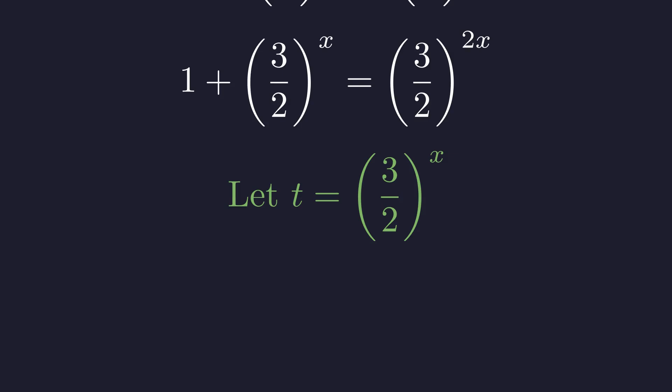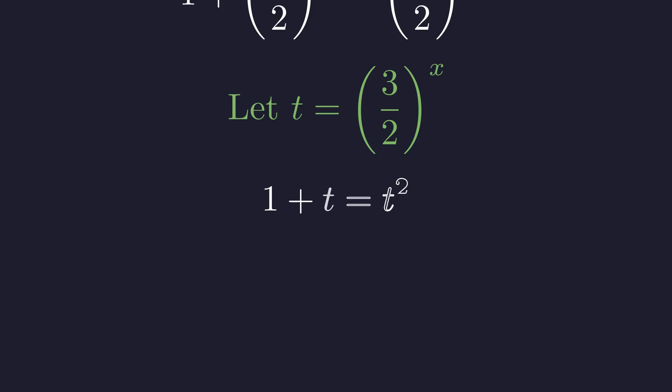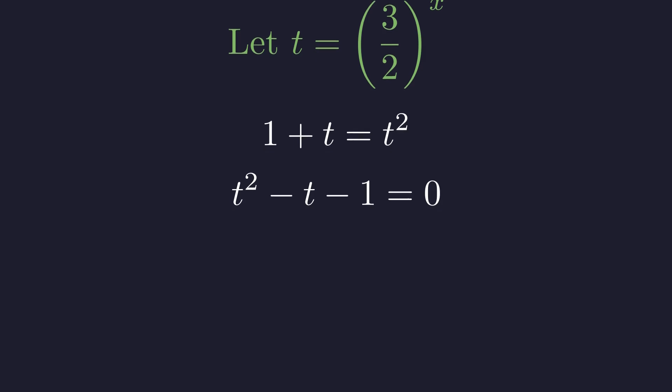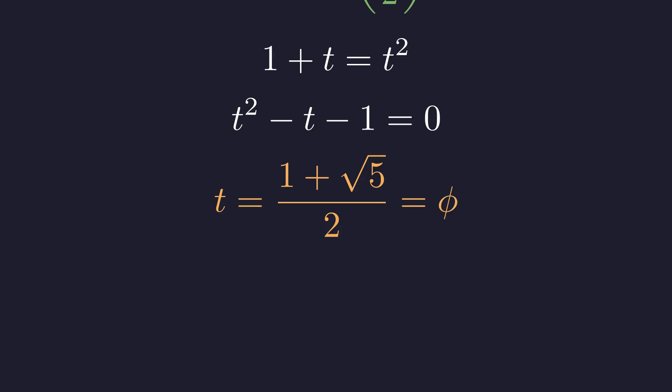Let's substitute t for 3 over 2 to the power of x, similar to our earlier substitution. This gives us a remarkably simple equation: 1 plus t equals t squared. Rearranging into standard form, we get t squared minus t minus 1 equals 0. This is the defining equation for the golden ratio. The positive solution to this quadratic is precisely the golden ratio. The negative solution is invalid for our exponential context.